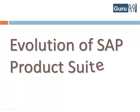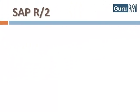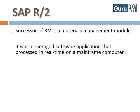Let's look into the evolution of SAP Product Suite. SAP R2 was a successor of RM1, a materials management module. It was a packaged software application that processed in real time on a mainframe computer.